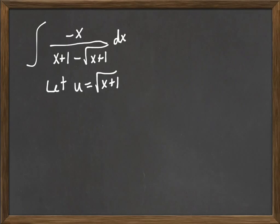If u is equal to the square root of x plus 1, then x would be u squared minus 1. Okay, no problem.